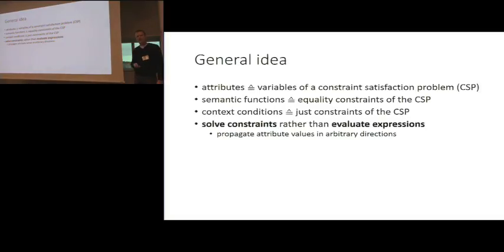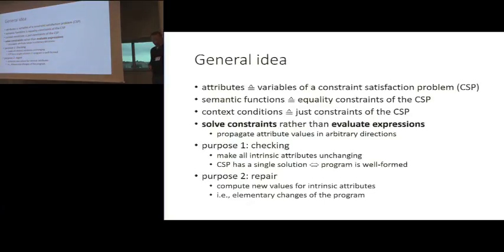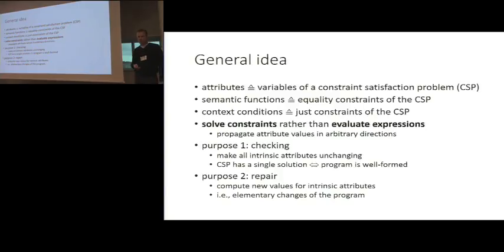The constraint solver differs from standard evaluation in that it can propagate values in arbitrary directions — not only bottom-up but also top-down. This gives us our two purposes. For checking: we make all intrinsic attributes corresponding to surface properties of the program unchanging, everything else changing, and pass the constraint satisfaction problem to the solver. For repair: we make the intrinsic attributes variable and compute new values for them — these correspond to the elementary changes to the program presented to the user.